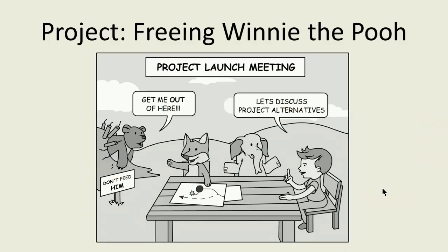If you're familiar with the story of Winnie the Pooh, you may recall that Pooh dropped in on Rabbit one day and ended up jammed in Rabbit's doorway after helping himself to all of Rabbit's honey. For Pooh, this should have been a very short project: one, visit Rabbit; two, consume honey; and three, go home.